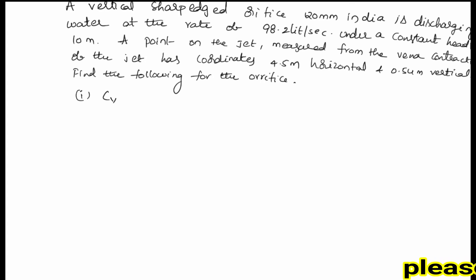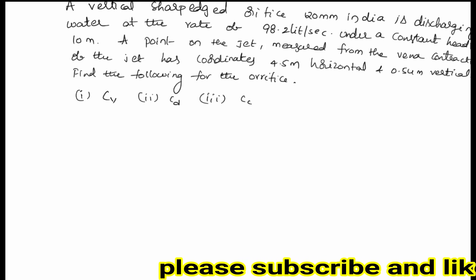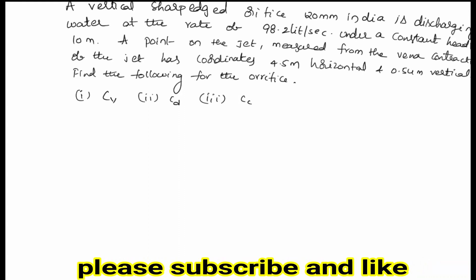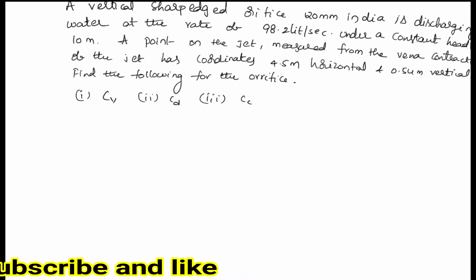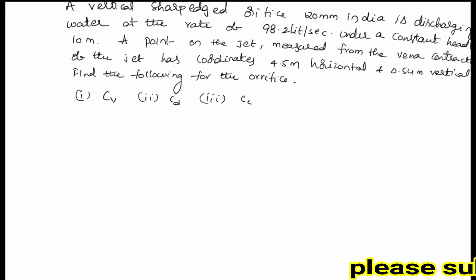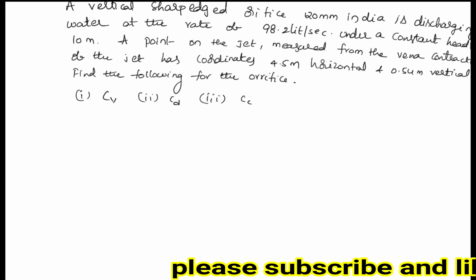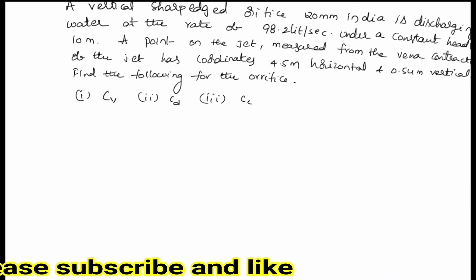They ask us to find the coefficient of velocity Cv, the coefficient of discharge Cd, and the coefficient of contraction Cc. They have given the diameter of the orifice as 120 mm, so we can calculate the area of the orifice. The discharge value is 98.2 liters per second, the constant head H is 10 meters, and the x and y coordinates from the vena contracta are x = 4.5 meters and y = 0.54 meters.